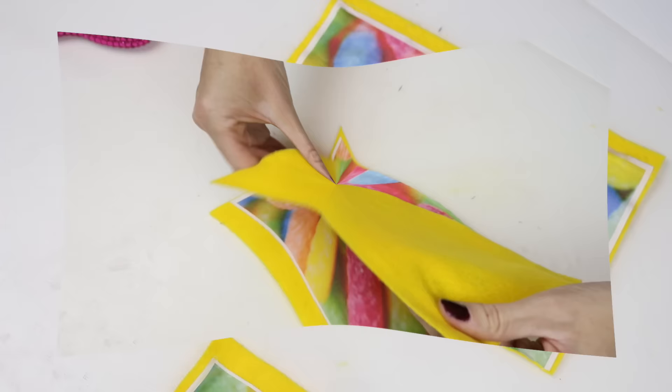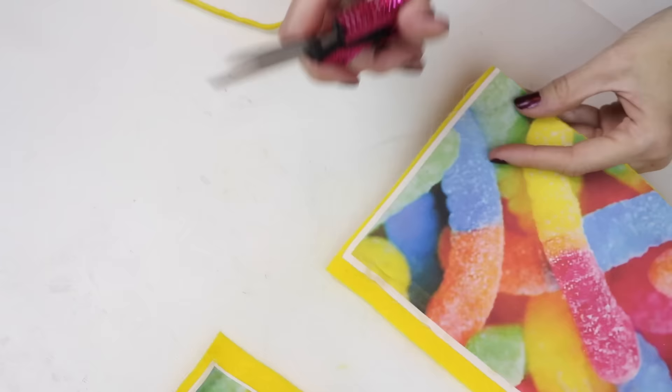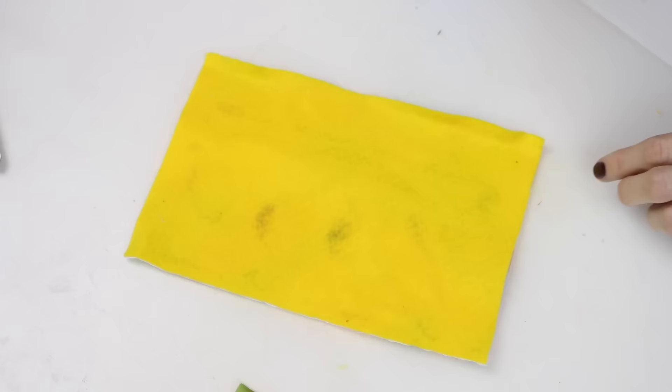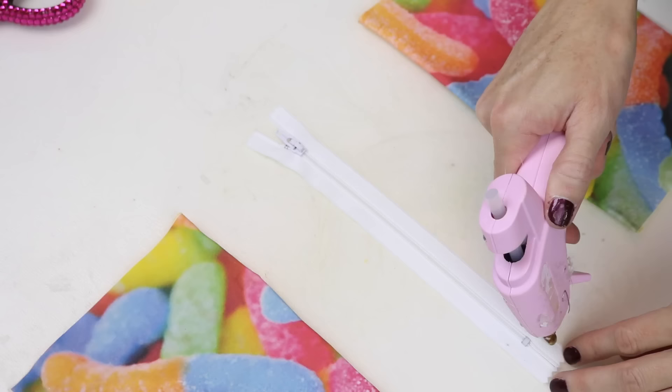Now if you have any ends that need to be trimmed, go ahead and trim those off. Apply some hot glue to the end again to give it a clean look. Do that for both pieces. Then glue those to the zipper.